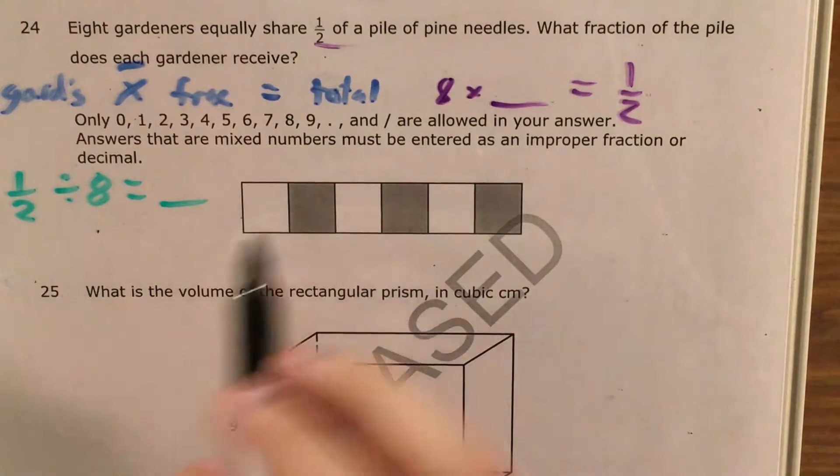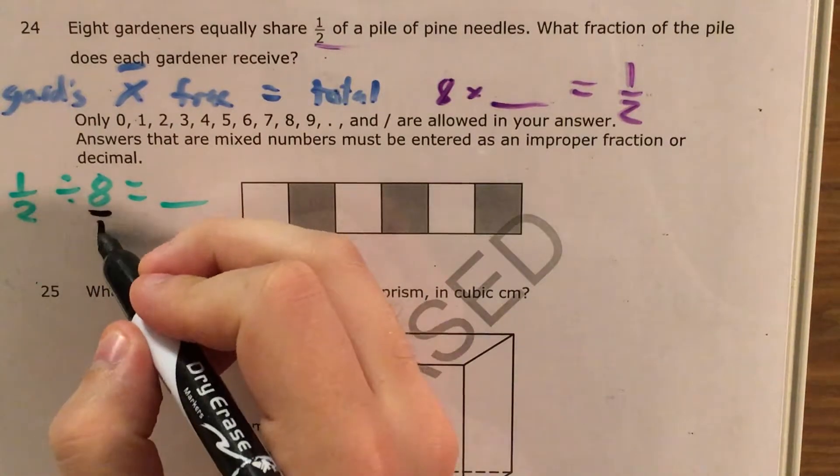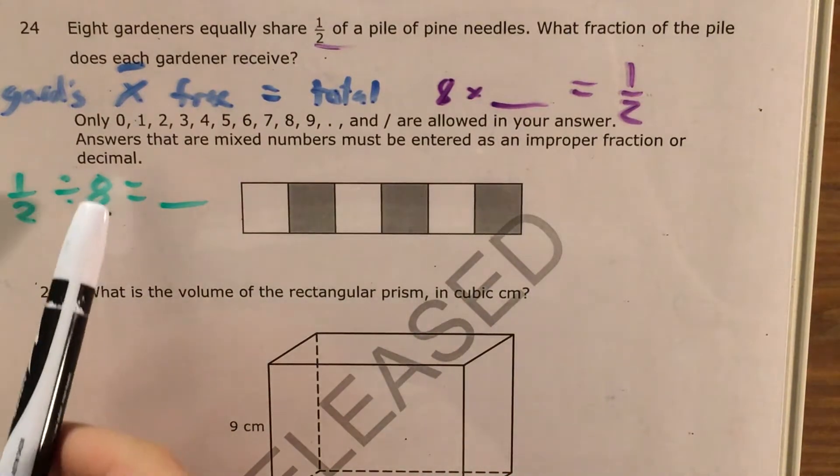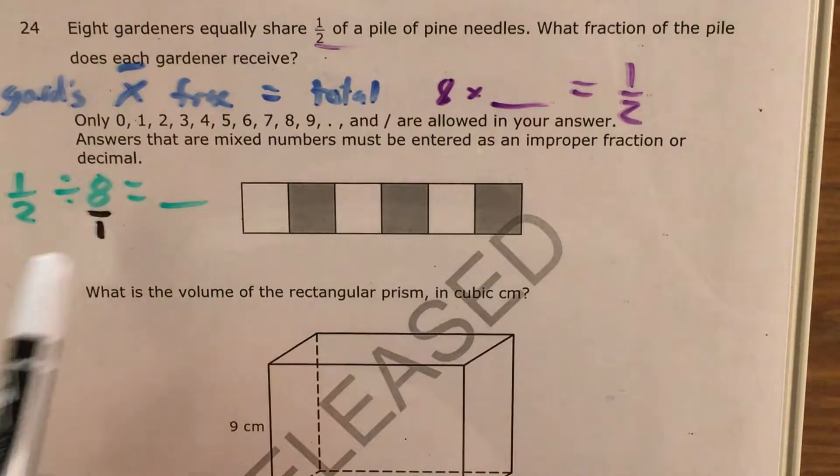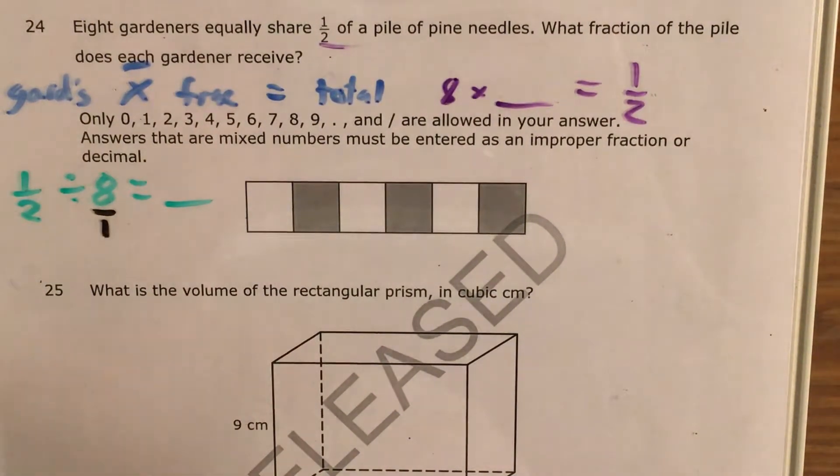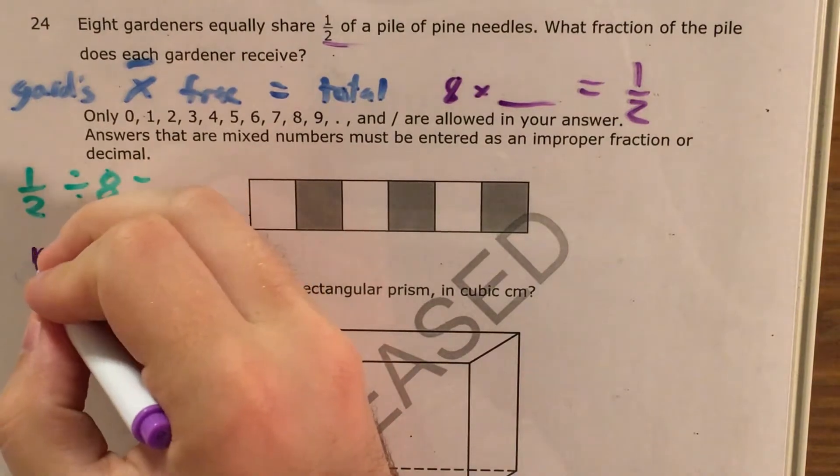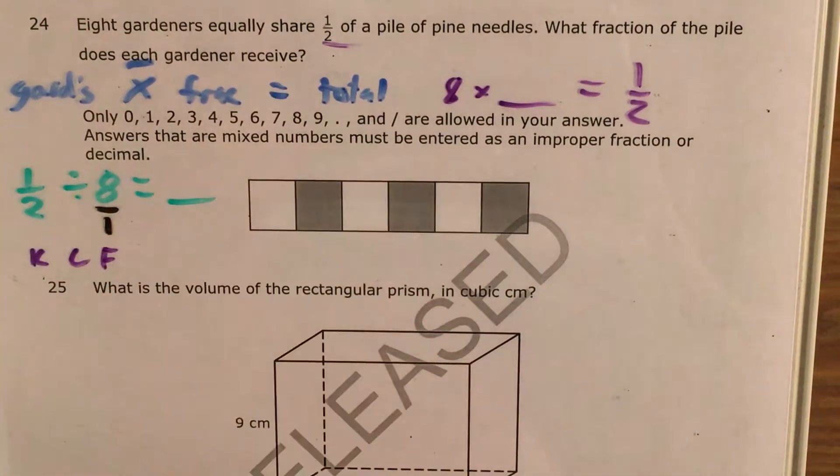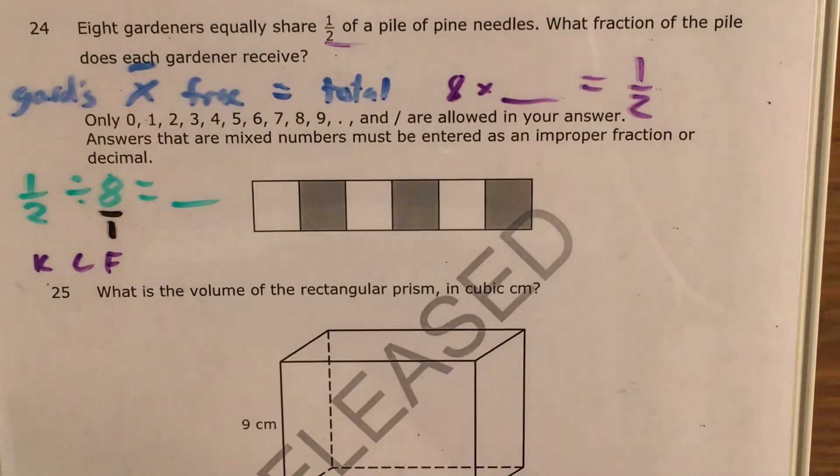Now whenever I see a problem like this, my instinct is to say that this isn't 8 anymore, this is 8 over 1, or 8 wholes. And now, I'm going to use my keep change flip trick, where I keep this fraction like it is, I change dividing to multiplying, and I flip 8 over 1 so it becomes 1 over 8.